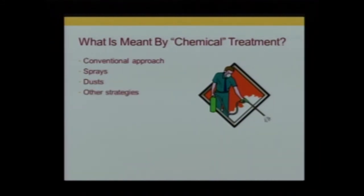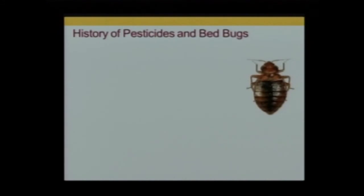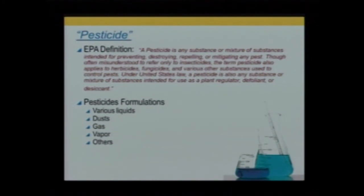Let's start with a definition. The EPA has defined a pesticide as any substance or mixture of substances intended for preventing, destroying, repelling, or mitigating any pests. It's not necessarily just something that kills — it can repel, and it can include disinfectants, antimicrobials, and such. All of those are types of pesticides.